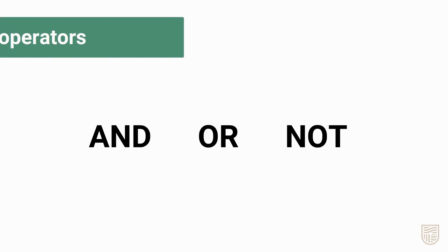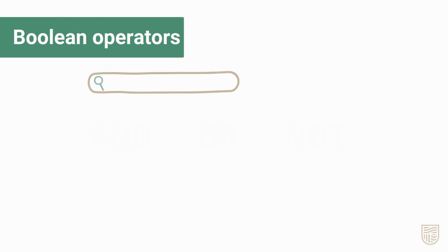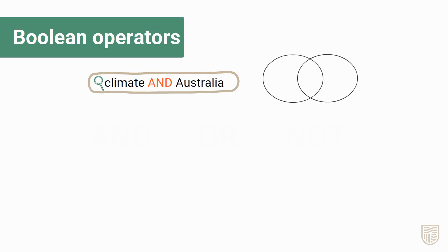Use uppercase AND, OR and NOT to combine your search words. These are known as Boolean operators. Use AND to combine your keywords and narrow your search results. For example, if you search for climate AND Australia, you'll only see results that contain both your keywords. The more keywords you add separated by AND, the fewer results you'll get.